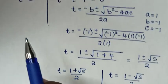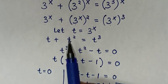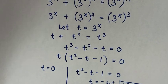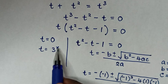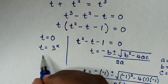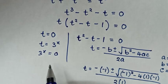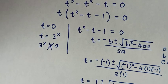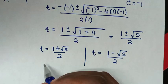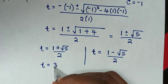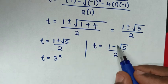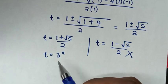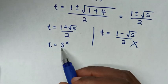Now we have the values of t. We recall that we let t equal to 3 power x. Since 3 to the power of any number is always greater than 0, t cannot equal 0, so that solution is not possible. Also, (1 minus square root of 5) over 2 is a negative value, and 3 power x is always positive, so that solution is also not possible.